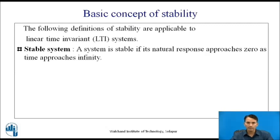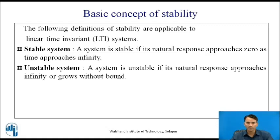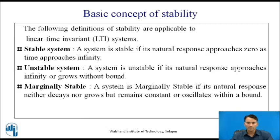A stable system is a system whose natural response approaches zero as time approaches infinity. An unstable system is one whose natural response approaches infinity or grows without bound. A system is marginally stable if its natural response neither decays nor grows but remains constant or oscillates within bounds.